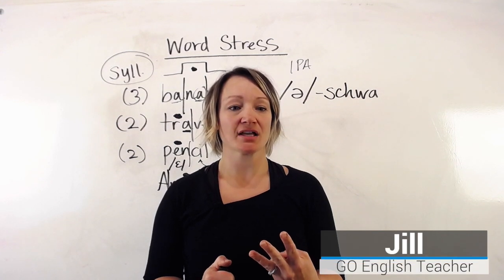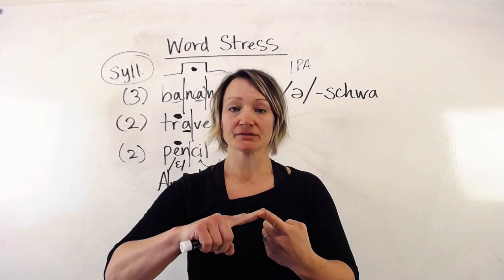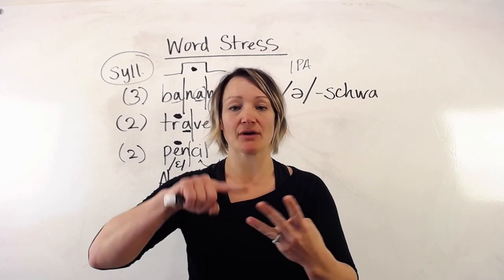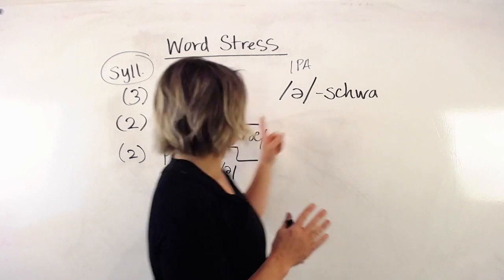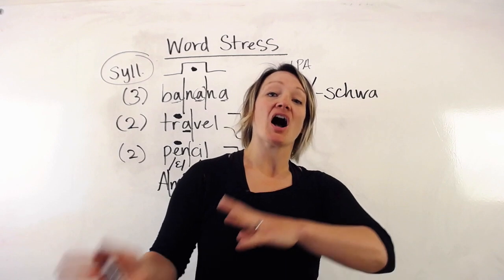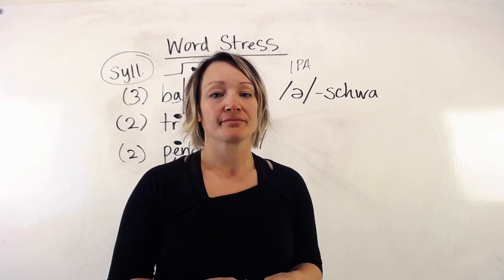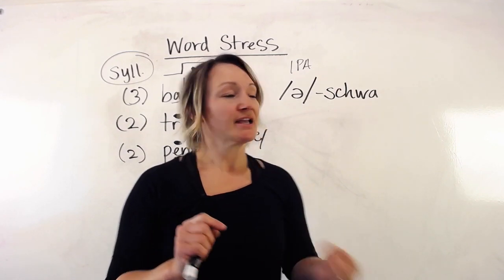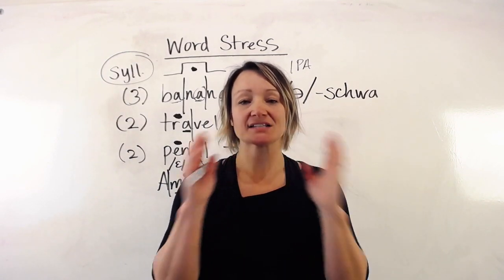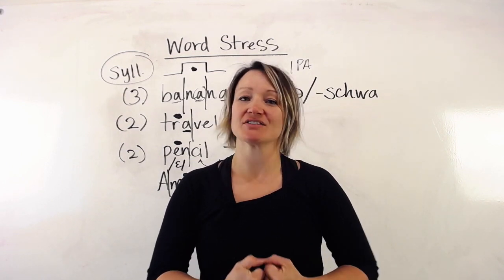Just to review: we have three ways to stress a syllable in English — we can make it longer, louder, and more clear. Those are your stressed syllables. The unstressed ones become the schwa sound — a shorter, relaxed English vowel sound. Good job today, everyone — continue to practice this, and I'll see you tomorrow. Bye!